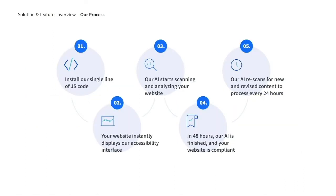From our experience, business owners have found that the best part of becoming compliant with us is definitely the super simple process. The first step is installing a single line of JavaScript code — that takes five minutes and can integrate with any website or CMS platform. Then your website instantly displays our accessibility interface, the AI kicks in, and within 48 hours it's finished. Your website is fully accessible and compliant, and you'll receive the accessibility statement to your email.